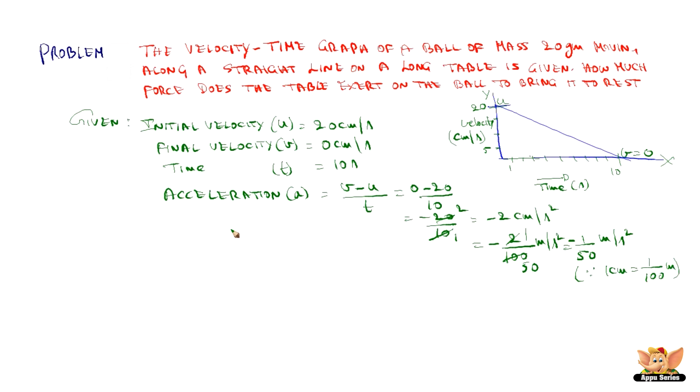Now that we know acceleration, we need to find what is the force exerted. From Newton's second law, we have the equation force F is equal to mass m into acceleration a. So mass m is given as 20 grams, which again we need to convert back into kgs. So divide by 1000, we will get it as 1 by 50 kgs, since 1 gram is equal to 1 by 1000 kgs.